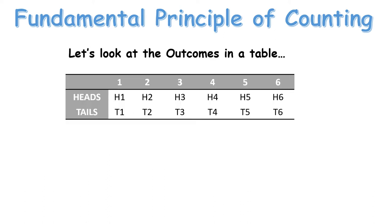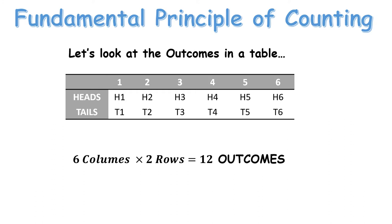This is called a 2-way table. On the left-hand side are the outcomes for the coin - that's 2 - and along the top are all the outcomes for the dice: 1, 2, 3, 4, 5, 6. All the outcomes fit neatly in the table. The 12 comes from 6 columns and 2 rows - 6 outcomes across the top and 2 outcomes along the sides gives 12 outcomes.